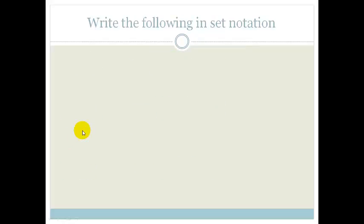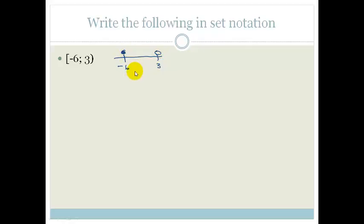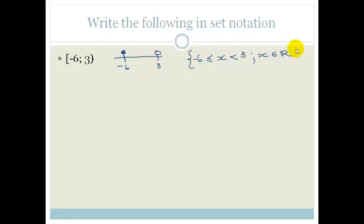Now let's look at some conversions. It says write the following in set notation. The best way to do this is first to draw a little number line. We've got it going from minus 6 to 3 — including minus 6, but excluding 3. So we're saying x has to be smaller than 3, but it can be bigger than or equal to minus 6. And because they don't give us any limitations, we can say that x is an element of real values.